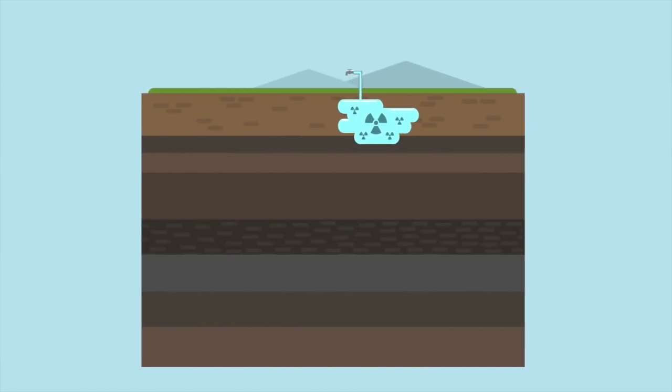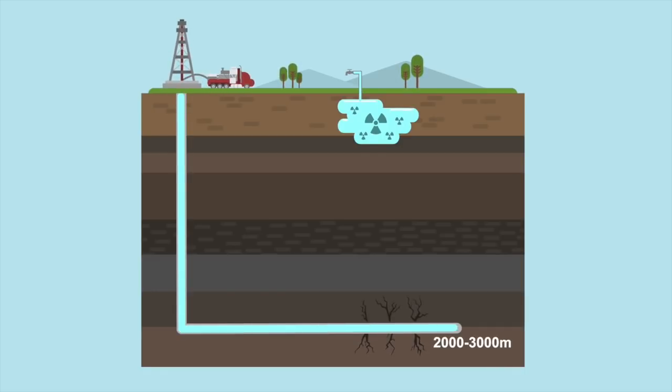As fracking itself typically occurs between 2,000 and 3,000 meters below ground surface or the equivalent of five CN towers stacked and aquifers are less than 600 meters below surface, the groundwater and fracking zones were too far apart to be connected.